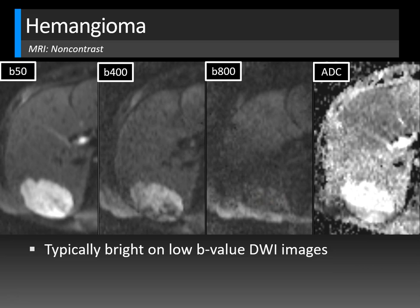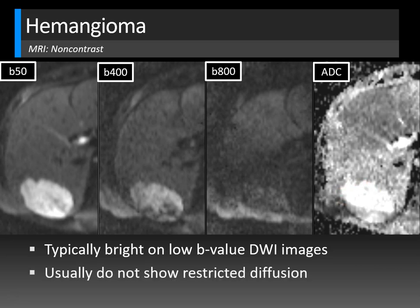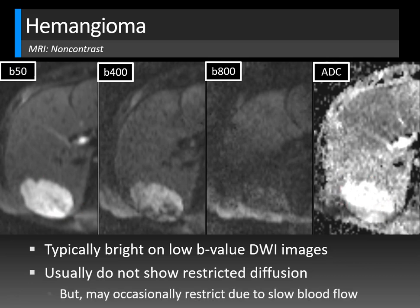The ADC sequence is independent of T2 weighting. Lesions that restrict diffusion will be dark on ADC, while those that don't will be bright. A typical hemangioma does not restrict diffusion — it's bright on low B-value and bright on ADC. Occasionally you may see hemangiomas that do restrict diffusion due to slow blood flow within the lesion, showing small areas of mixed restricted diffusion, but you shouldn't see severe diffuse restricted diffusion.